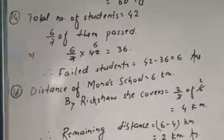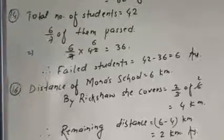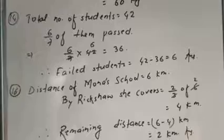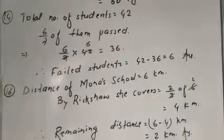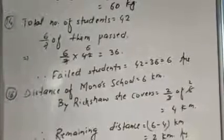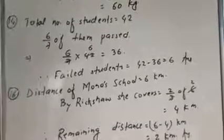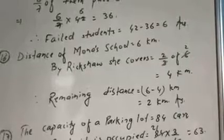Question number 16: Monika's school is 6 km away from her house. She covers 2 by 3 of the distance by rickshaw, and then the rickshaw has some fault, so the remaining distance she has to cover by walking. So let's find out how much she walks. First, the rickshaw covers 2 by 3 of 6.